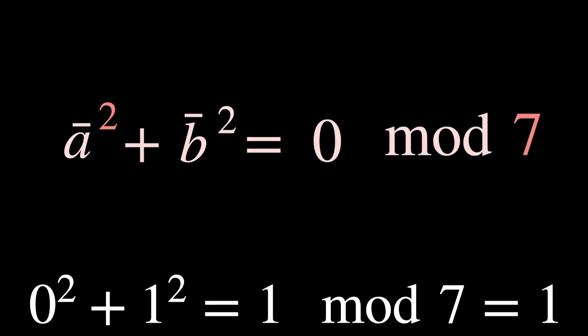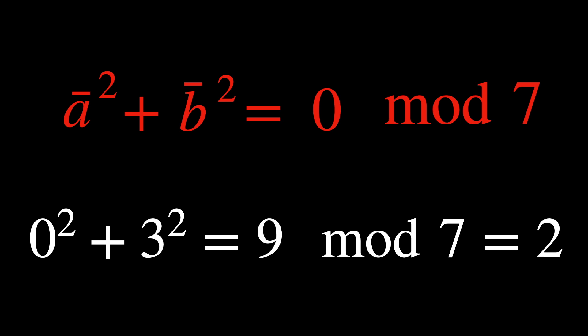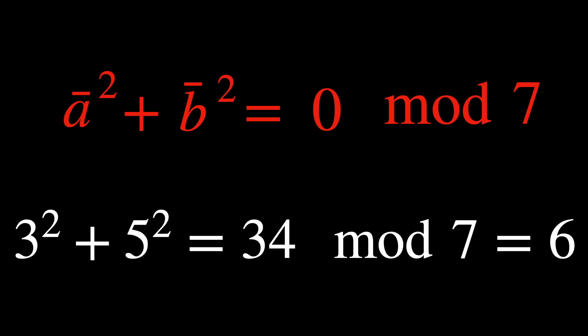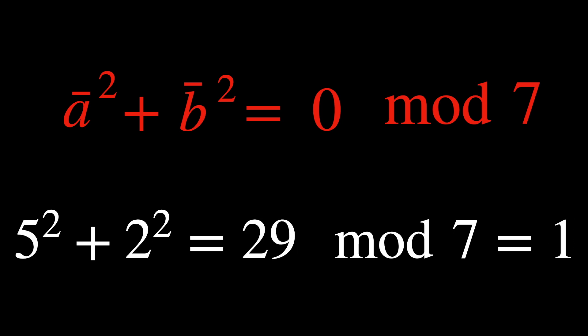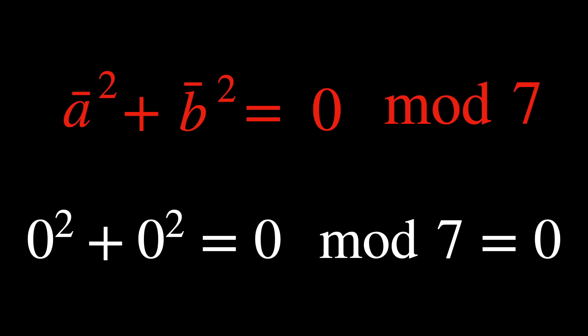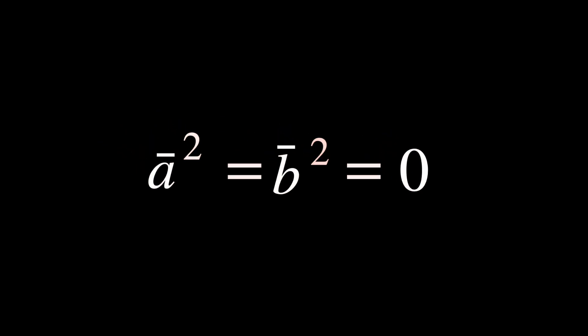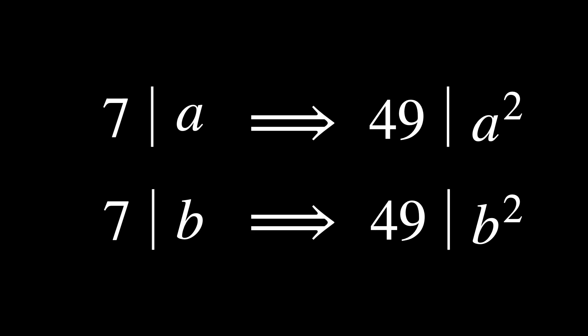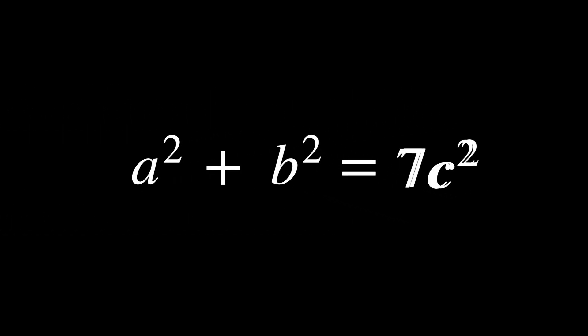Now we only have 7 possibilities for a-bar and 7 possibilities for b-bar. The analysis of the solutions of a-bar squared plus b-bar squared equals 0 modulo 7 amounts to checking the 49 choices of a-bar and b-bar and seeing which ones satisfy the equation. If you actually calculate it, you will find that the only solution to the equation is if everything equals 0. Saying a-bar equals 0 and b-bar equals 0 means that a and b leave no remainder when divided by 7 — this is exactly the same as saying that a and b are both multiples of 7. When this is true, it means that a squared and b squared are multiples of 49. It follows that their sum 7c squared is a multiple of 49 as well.